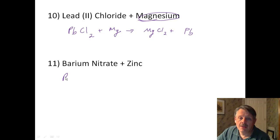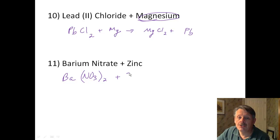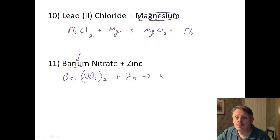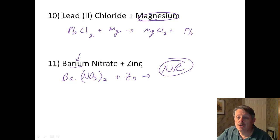Number 11: barium nitrate, Ba(NO₃)₂, plus zinc. Barium has a 2+ charge, so that's Ba(NO₃)₂ plus zinc. Looking at the activity series, barium is higher — it's already bonded with nitrate — so no reaction happens here for number 11.